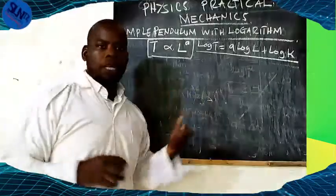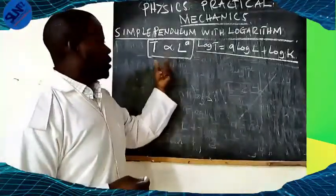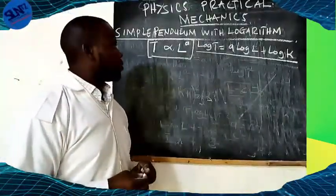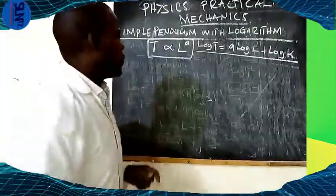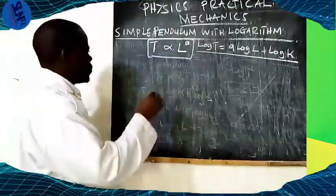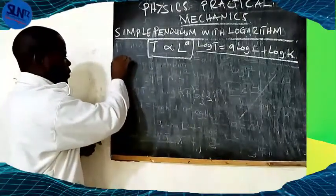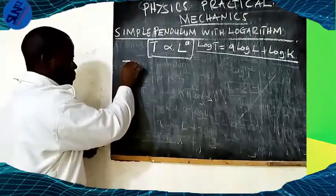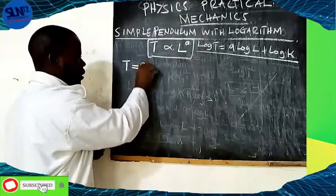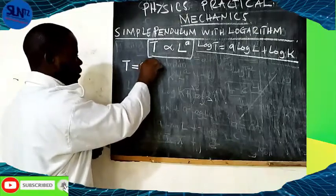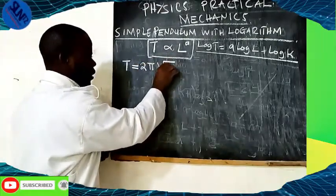Now I am going to show you how this equation is derived, and we are going to make a comparison between this logarithmic form and the general equation from the simple pendulum. From the general equation of the pendulum, the periodic time T equals 2π times the square root of L over g.